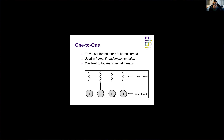The one-to-one model corresponds to kernel-level thread implementation — each user thread maps to a kernel thread, scheduling happens in the kernel, and the kernel schedules between different kernel threads. This gives independence between different threads, and a blocking system call in one thread cannot block other threads. However, this can lead to too many kernel threads in a heavily multi-threaded application, consuming a lot of system resources and potentially slowing down the system.